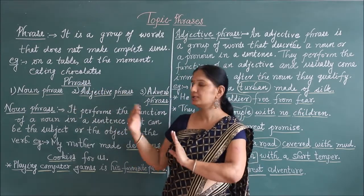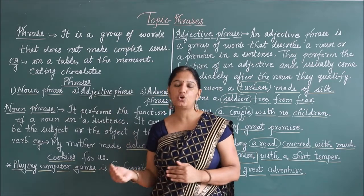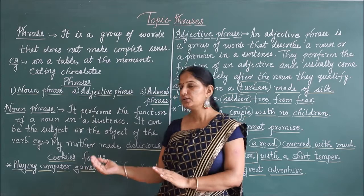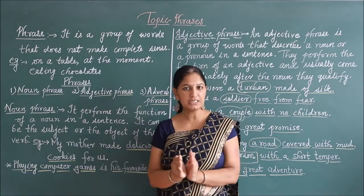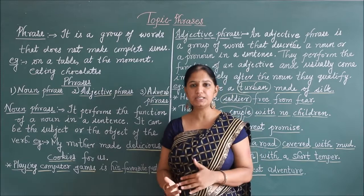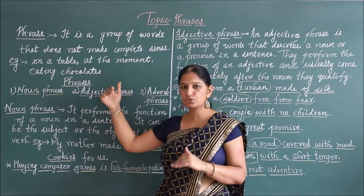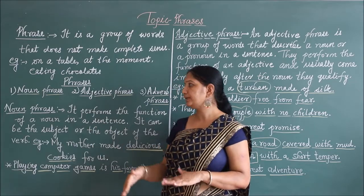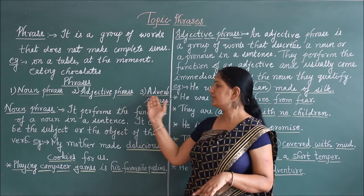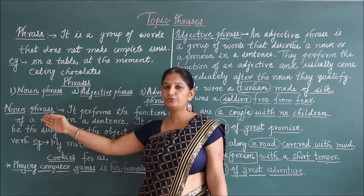For example, if we use 'eating chocolates' in a sentence — 'I am fond of eating chocolates' — then it is giving complete sense. But 'eating chocolates' alone does not have complete sense, so it is called a phrase. There are three kinds of phrases: noun phrase, adjective phrase, and adverb phrase.